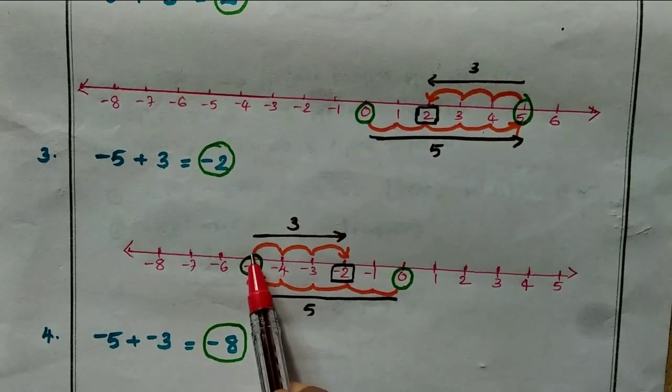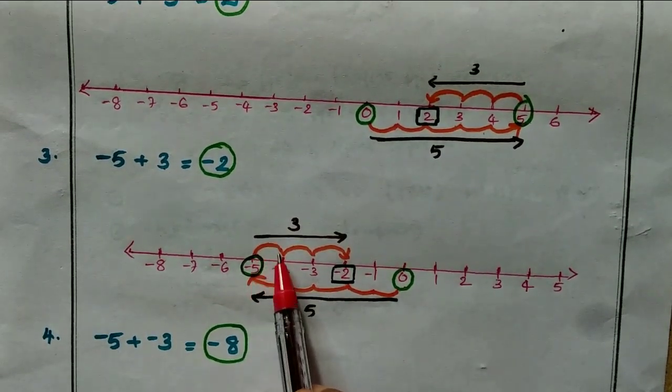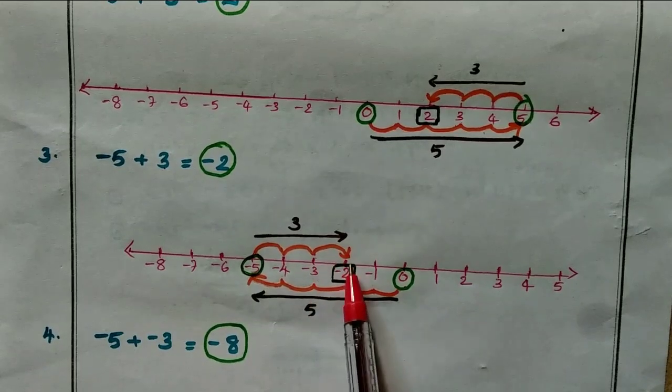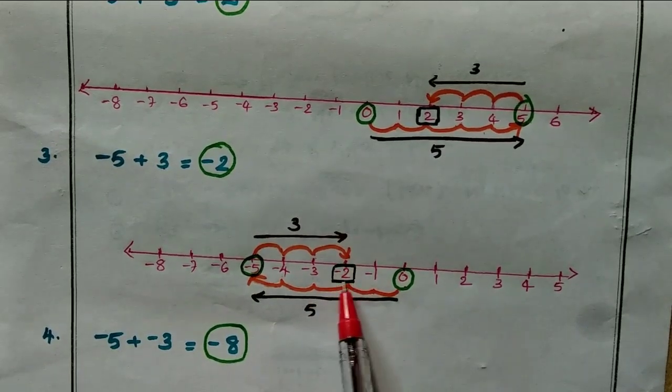Move right 3 positions: 1, 2, 3. From minus 5, moving right 3 gives you minus 2.